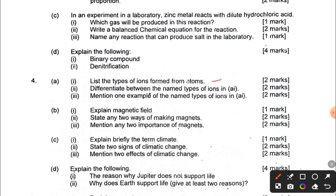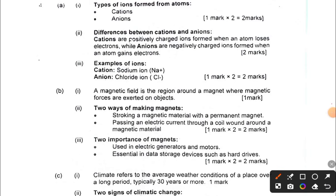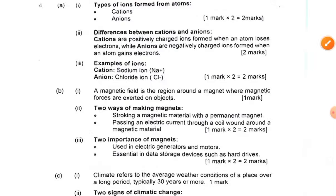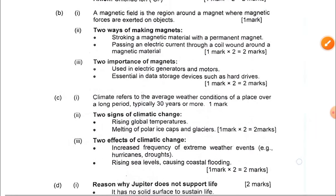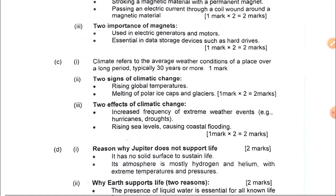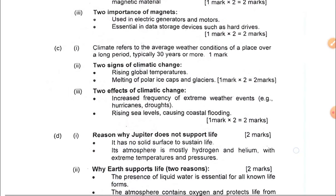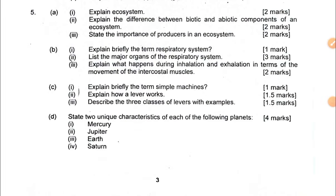Question 4 covers the types of ions formed from atoms, differentiating between the ions with examples. Question 4b has to do with the magnetic field. Question 4c has to do with climate. Question 4d covers the solar system, ecosystems, and biotic and abiotic factors.